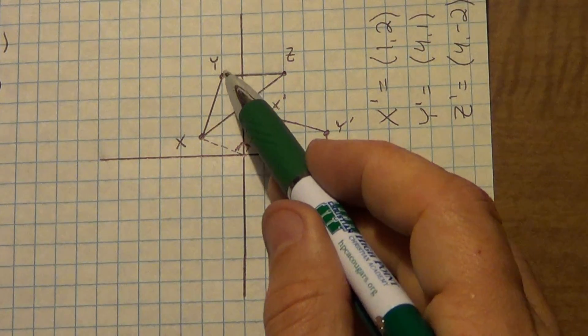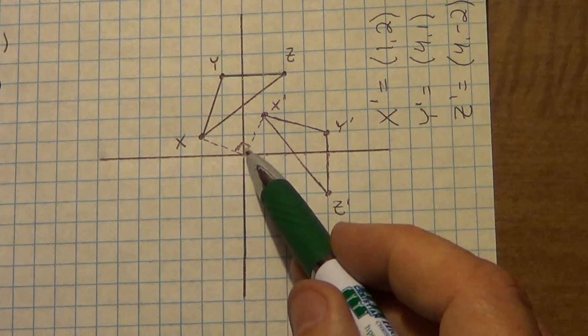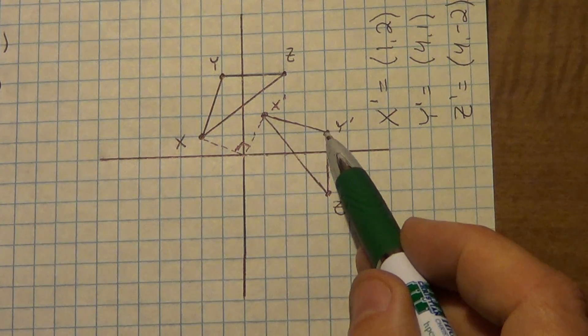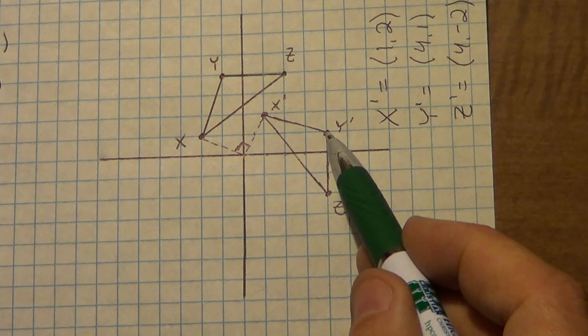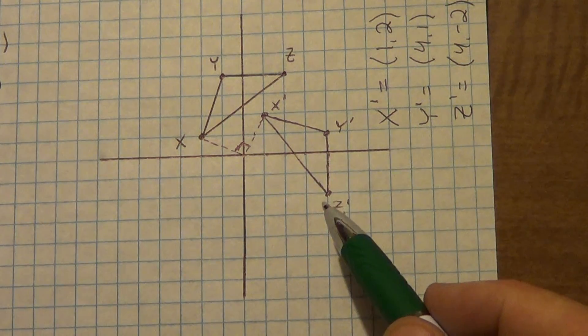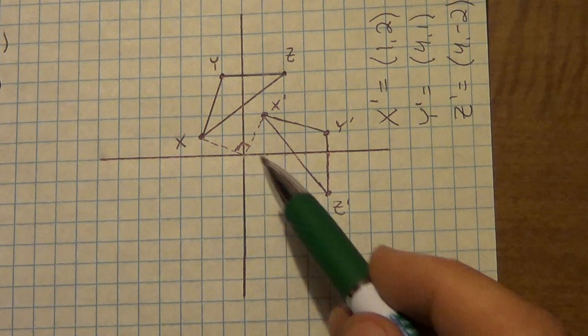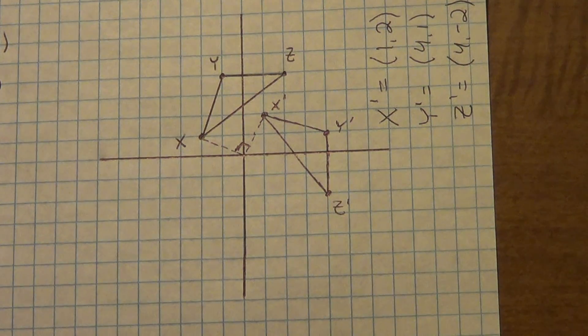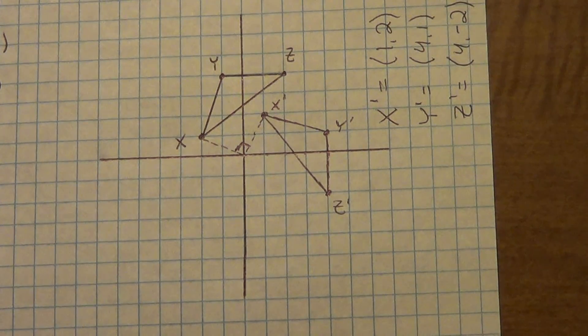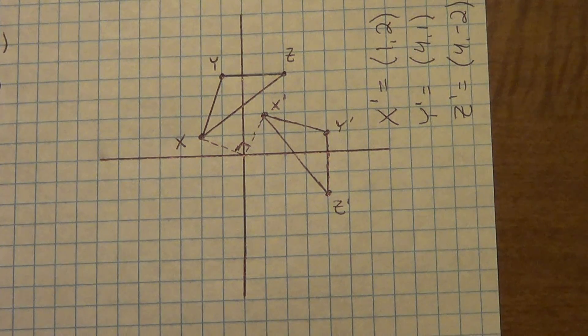I can do the same thing — go from Y to the origin and out to Y prime, and that should be a right angle. Or Z to the origin to Z prime — that should be a right angle. And the sides of that angle should be the same distance.